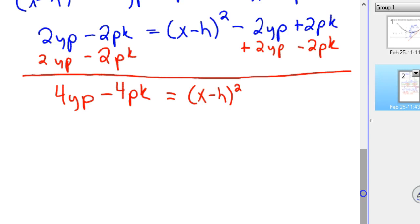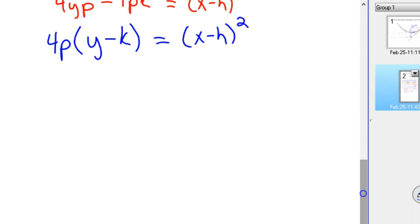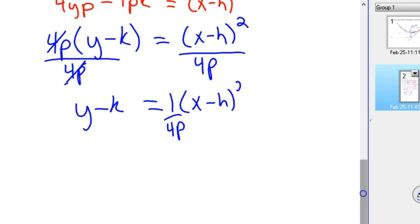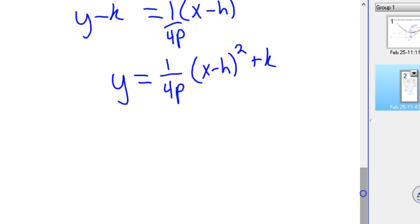Next step, factor out the 4 and the P, and you're left with Y minus K equals X minus H squared. We'll just keep going, we'll solve for Y, so we're going to divide by 4P on both sides. So you've got Y minus K equals 1 over 4P times X minus H squared. We're going to add the K over, and our final equation in the general form of a parabola is Y equals 1 over 4P times X minus H squared plus K, where P is that distance from the vertex to the directrix or the vertex to the focus, and H, K is your vertex.